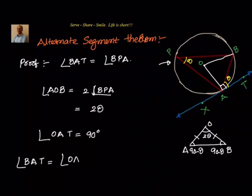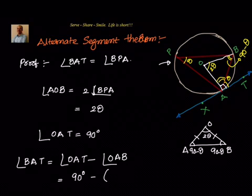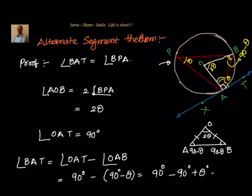Angle BAT equals angle OAT minus angle OAB. We know angle OAT is 90 degrees, and angle OAB is 90 minus theta. So angle BAT equals 90 minus (90 minus theta), which equals 90 minus 90 plus theta, which equals theta.